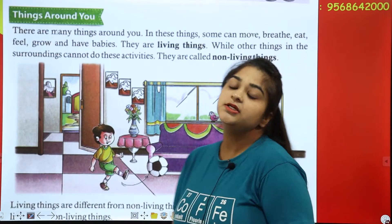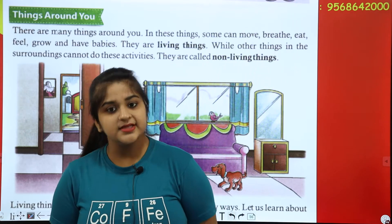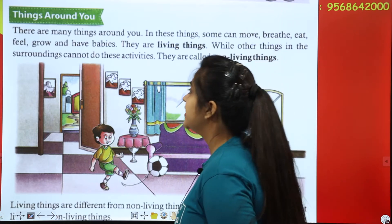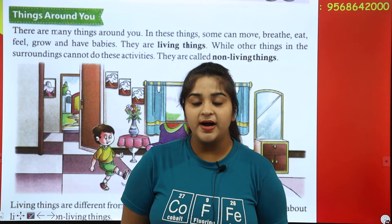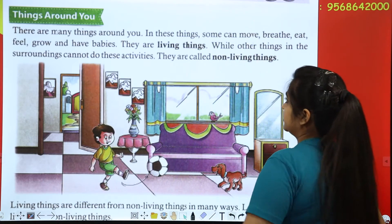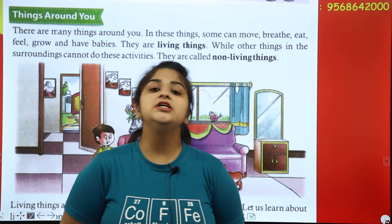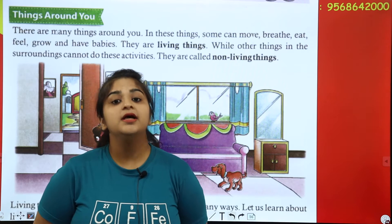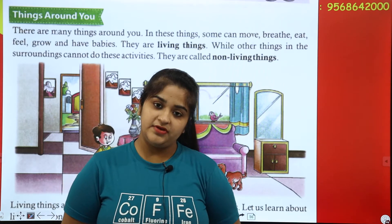Things that can breathe, grow, move, eat, feel and have babies are called living things. While other things in the surroundings cannot do these activities, and those things that cannot do this work are called non-living things. Those things that can breathe, eat, grow, feel and have babies are all living things.